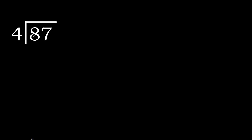87 divided by 4. 8 is not less, therefore with 8. 4 multiply by which number is nearest to 8 but not greater? 4 multiply by 3 is 12, is greater. Multiply by 2 is 8, is not greater. 8 minus 8 is 0.